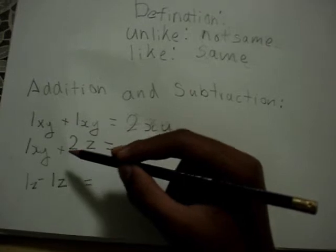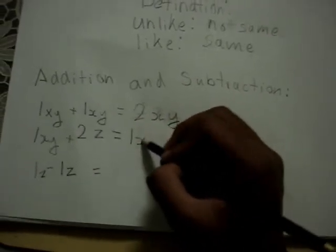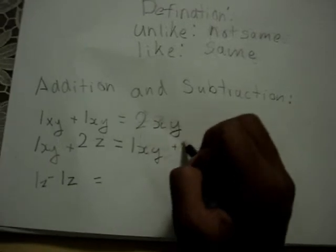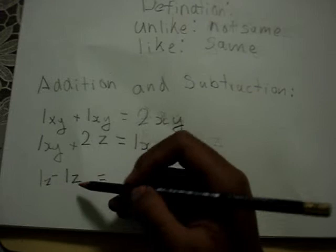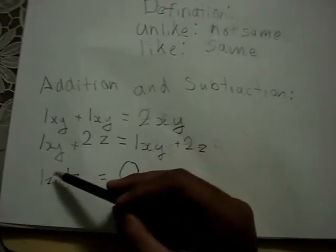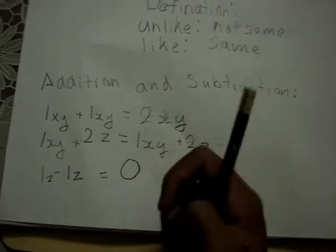1xy plus 2z, copy it because they are not the same terms. 1z minus 1z equals 0 because if you minus together, it's 0, and this will be nothing, so it will be 0.